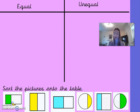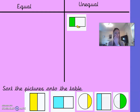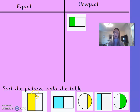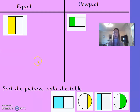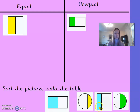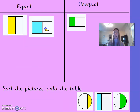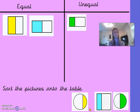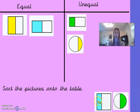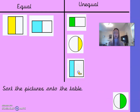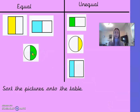Starting with the first picture: a rectangle split into two parts, but the parts are not the same size, so it is unequal. The square has been split down the middle into two equal parts — both parts are the same. The next rectangle is also split into two equal parts of the same size. The circle has not been split into two equal parts, so it is unequal. The square also has one larger part, so it is unequal. The final circle is split into two equal parts.